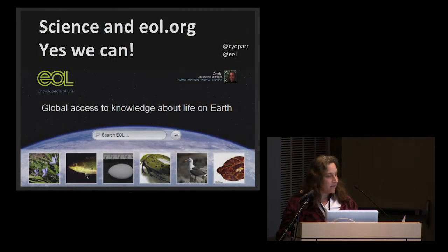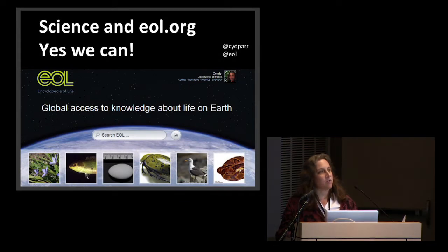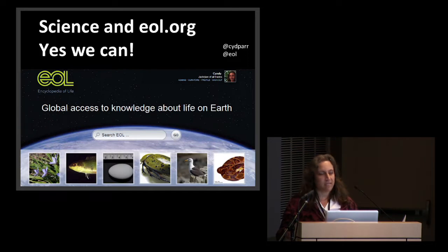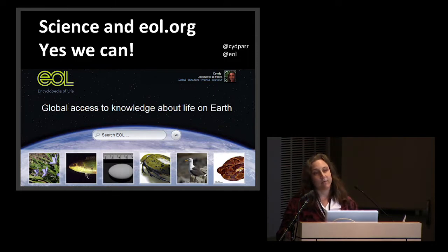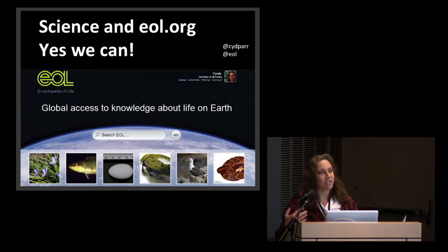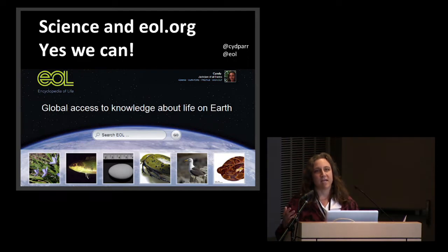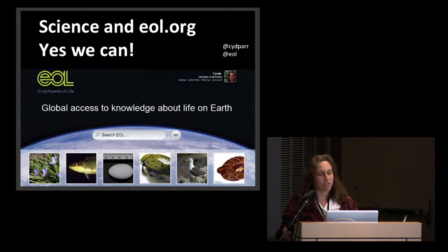Encyclopedia of Life is a website that provides global access to knowledge about life on Earth. Global means not just that our scope is global — we're interested in wildlife and plants and fungi all over the world — but our partnerships also extend across the world; we're not just a North American project. Access means everything is free and also freely reusable according to Creative Commons licenses. Knowledge refers to the fact that we're not serving up raw data; we're actually serving information that's synthesized or summarized across organisms. And life on Earth is essentially biological diversity.